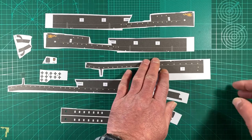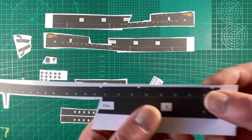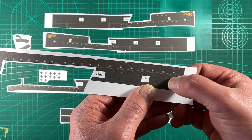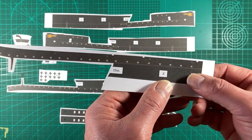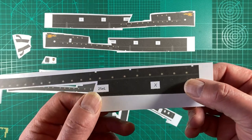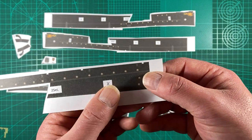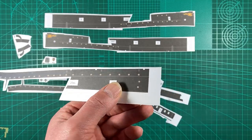I also want to do the portholes. As you can see, they're printed with a grey and a brass or orangey color porthole. What we do with these is we'll punch them out and replace them with brass photo-etch.